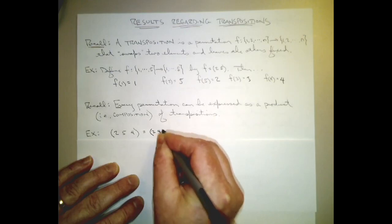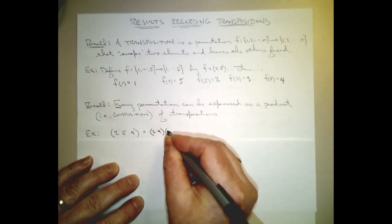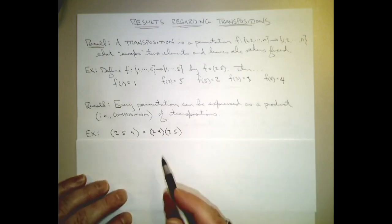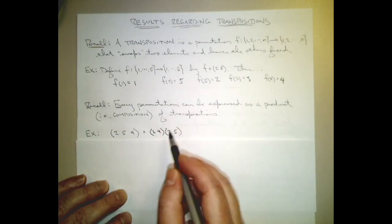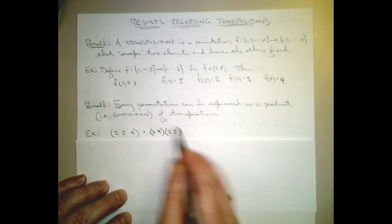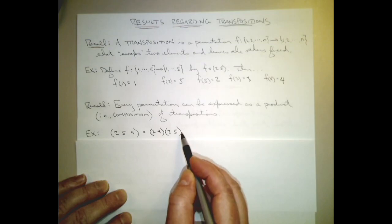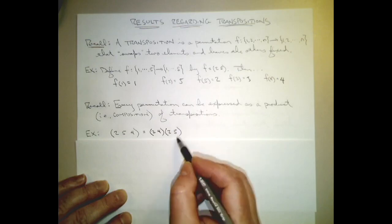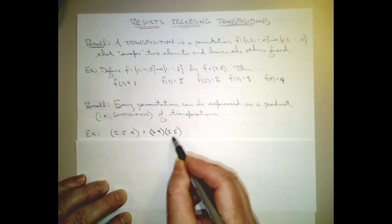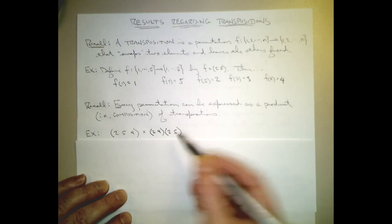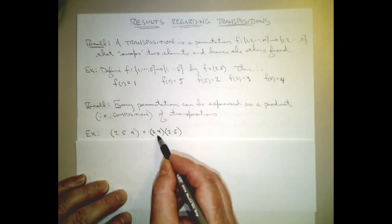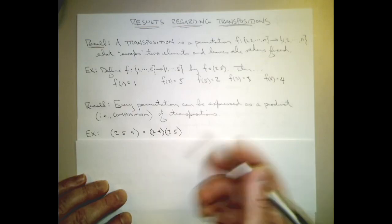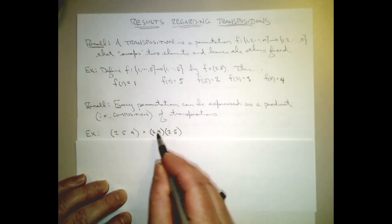Let's just write it as (2, 4) followed by (2, 5). And let's double check that this really does give us the same permutation. This is a composition of functions, and function composition is read from right to left. So if I wanted to know where the number 2 goes with respect to this composition, this first function (2, 5) is going to pick 2 up and send it to 5. And then the function (2, 4) is going to take that result 5 and fix it - 5 goes to itself. So in total, 2 is moving to 5 and staying there.